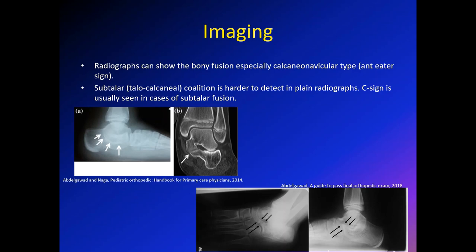For calcaneonavicular coalition, this can be easily seen on X-rays. In the oblique view you can see the connection very easily between the navicular and the calcaneus. In the lateral view there is the anteater sign, with protrusion of the anterior process of the calcaneus. The subtalar or talocalcaneal coalition is a little harder to detect. In the lateral view you can see the C sign, and a CT or MRI will show the coalition much more easily — you can see the coalition between the talus and the calcaneus.